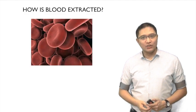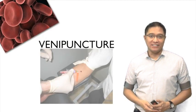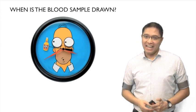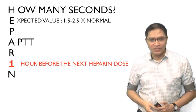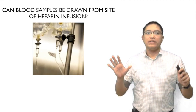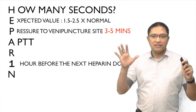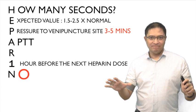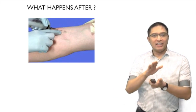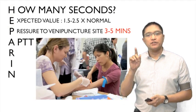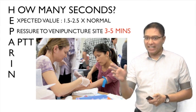How is blood extracted? By venipuncture. When is the blood sample drawn? One hour before the next heparin dose. Can blood samples be drawn from the site of heparin infusion? The answer is a solid no. After venipuncture, pressure must be applied to the venipuncture site for 3 to 5 minutes. That's very important.